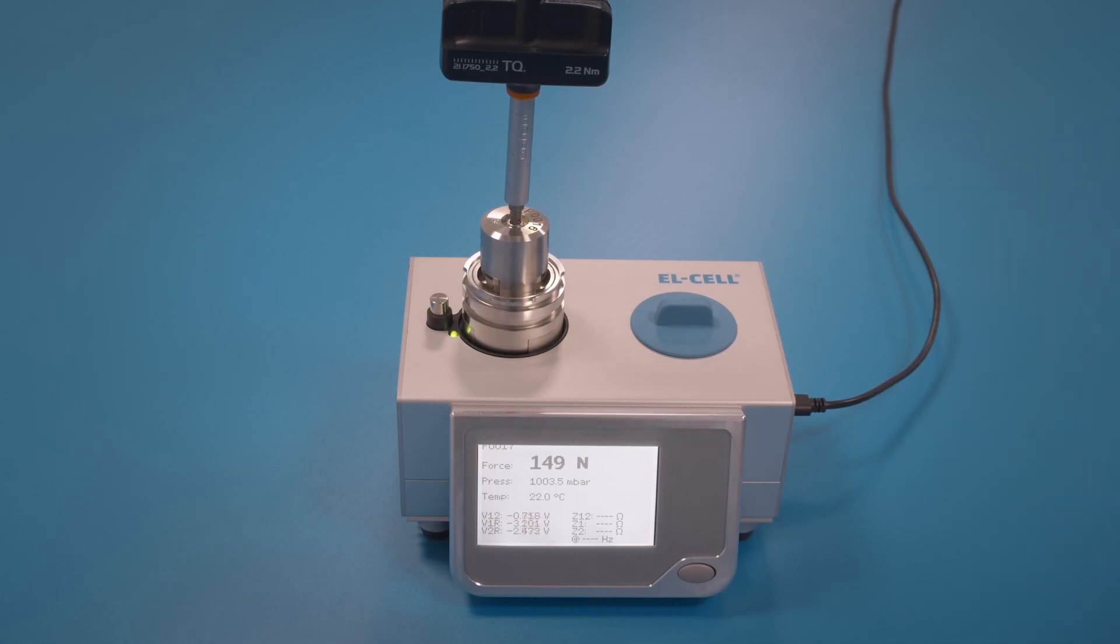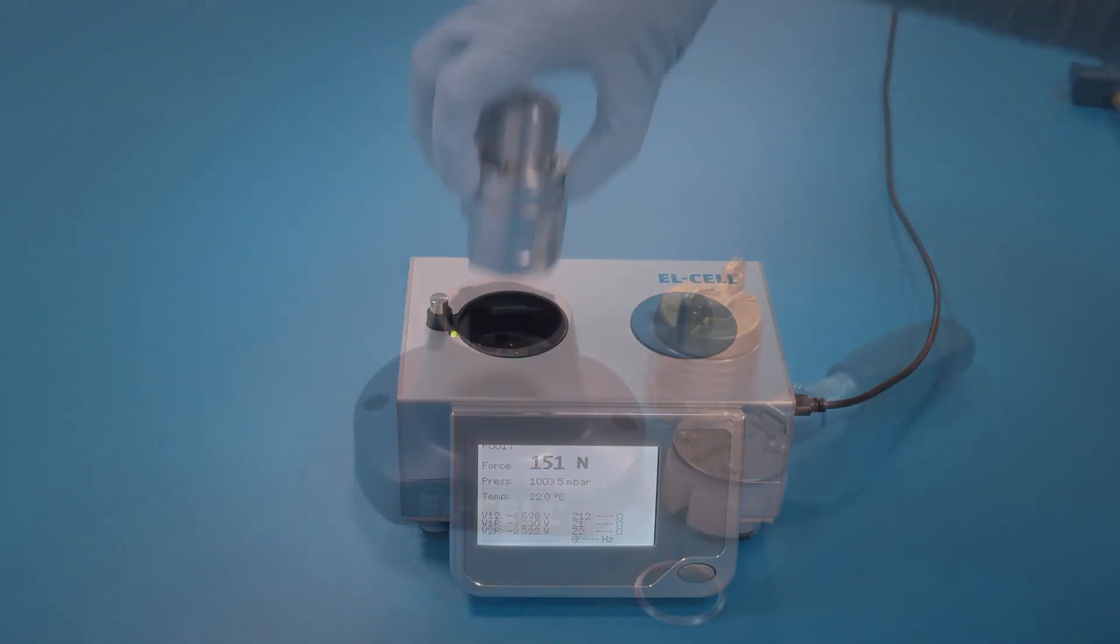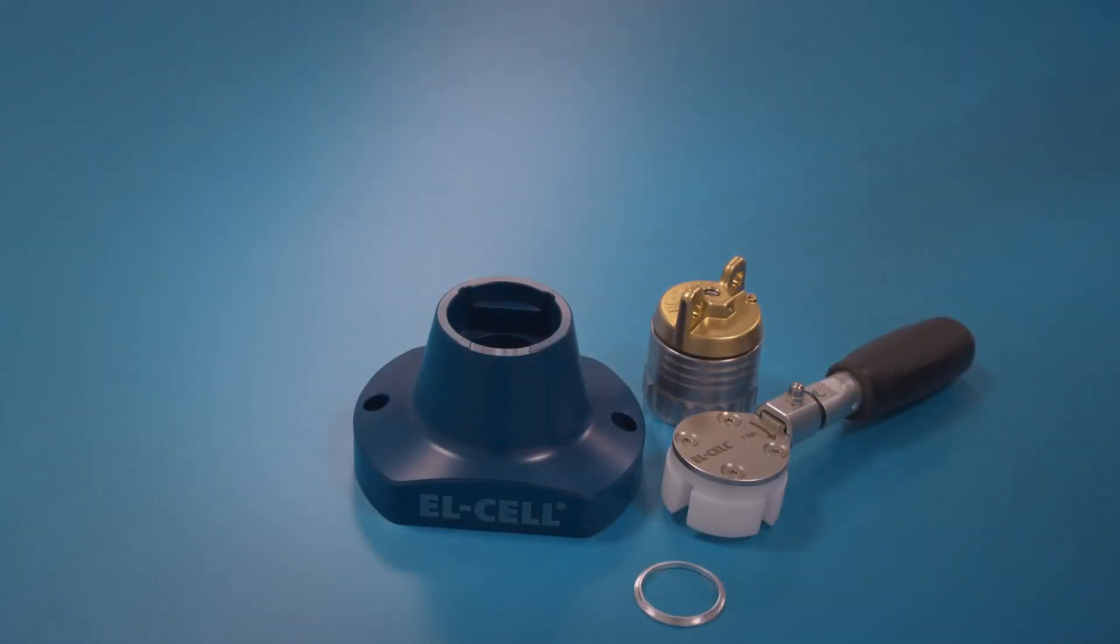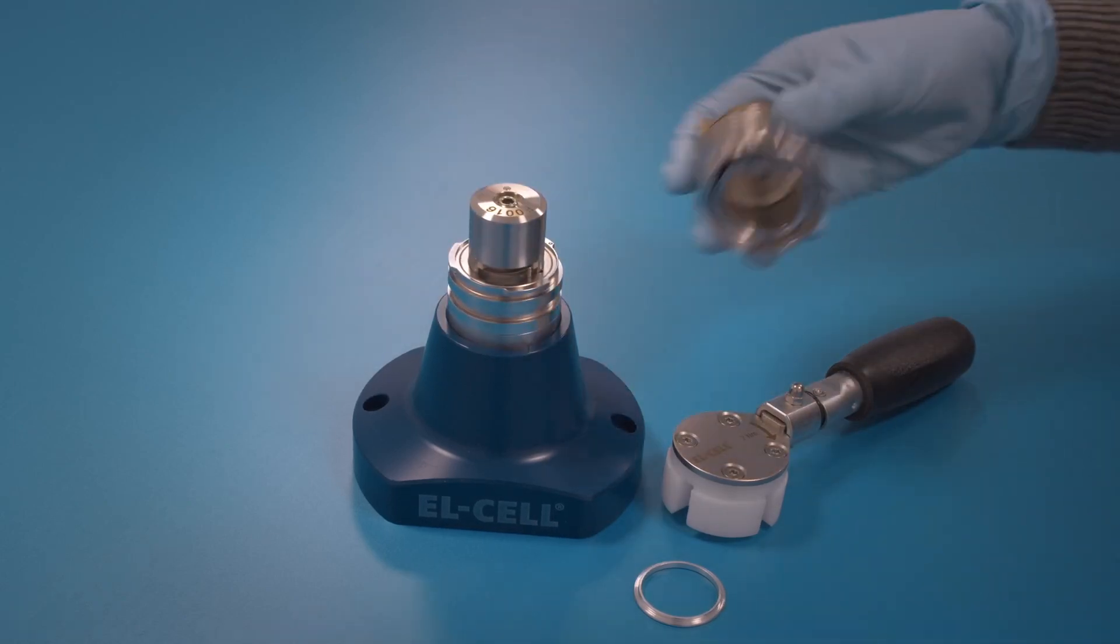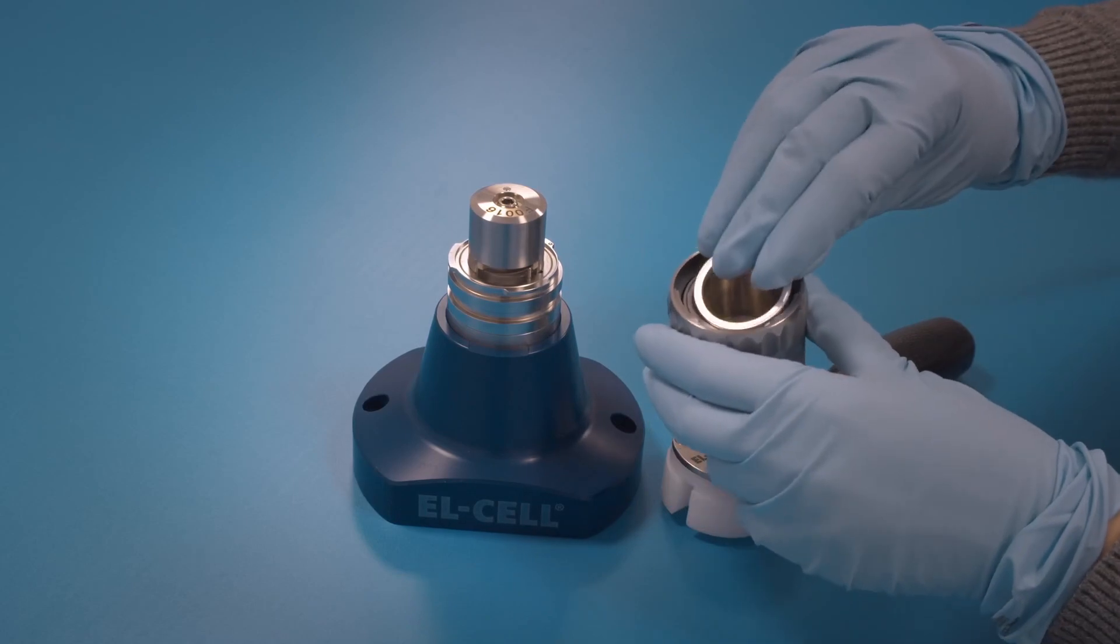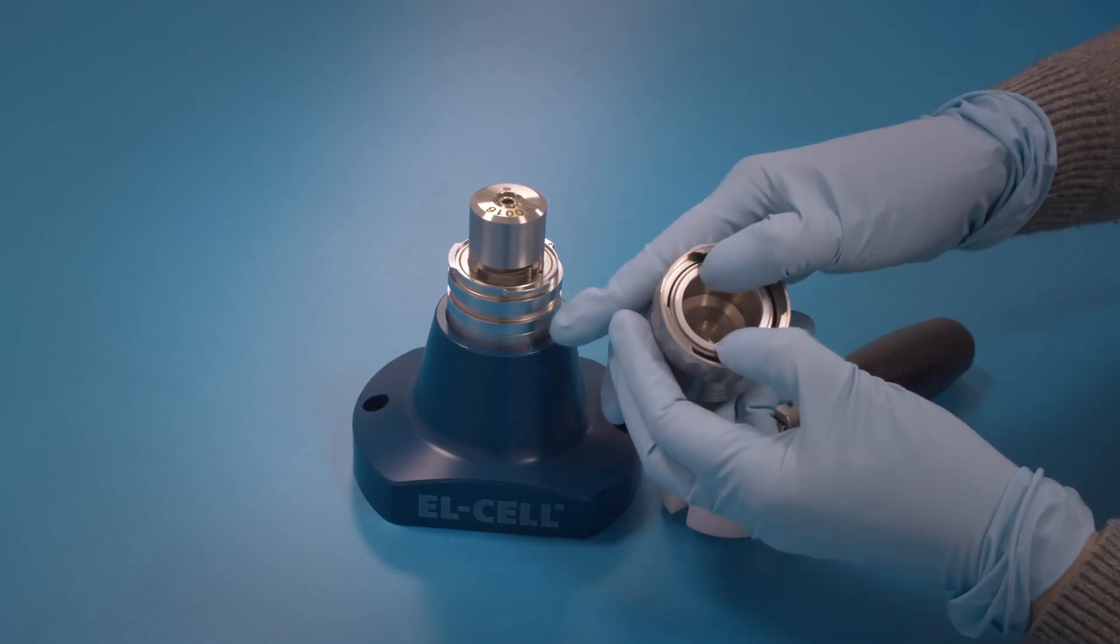Once the force is adjusted, the cell is removed from the Putz terminal. You can use this special stand here. Attach the cell lid with an aluminum seal.